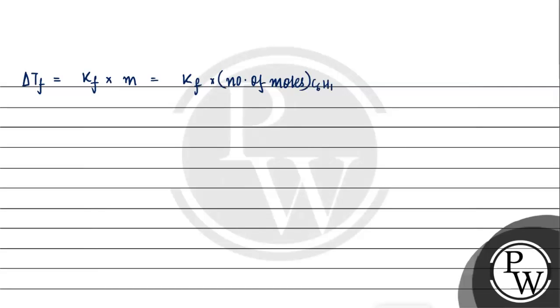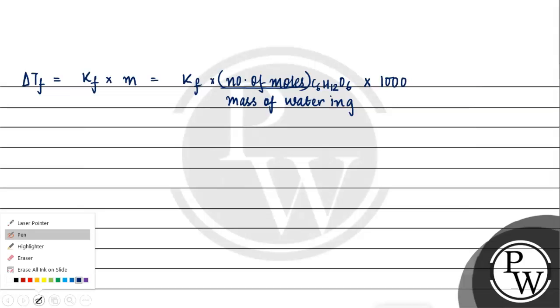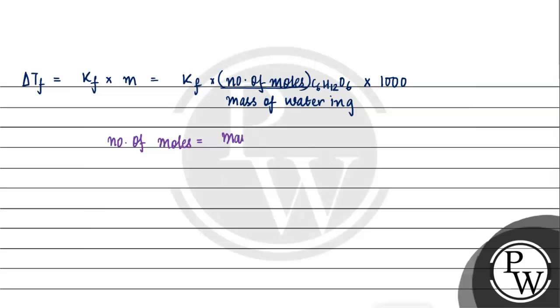We know the number of moles. Number of moles for a given substance is equal to mass given divided by molecular mass. So we will put this formula in for number of moles. Now we will put it in our final equation.